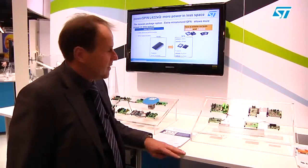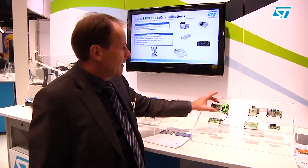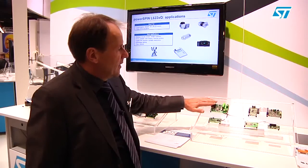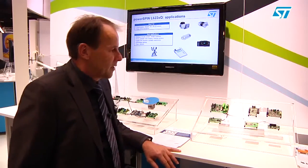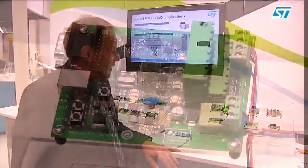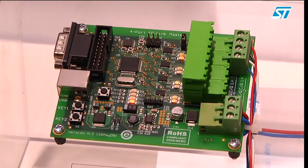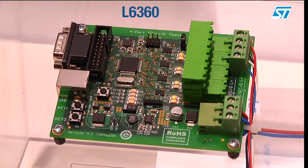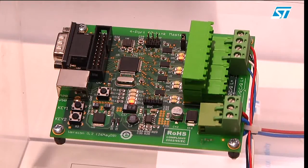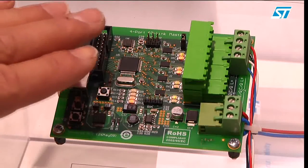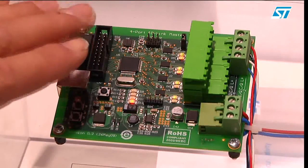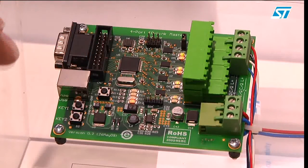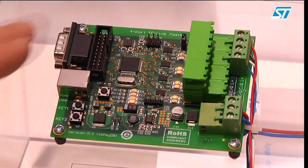ST is investing in the physical layer. Specifically today we show you the master system. The IO-Link master system is based on our physical layer L6360. It is produced in the BCD technology and it offers the CQ line which is used for communication. In addition, it offers an L plus switch to feed the sensor.